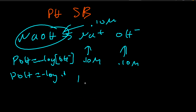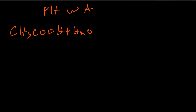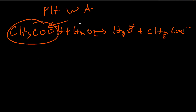Now let's see how to find the pH of a weak acid — this is where things get a bit more complicated. A weak acid doesn't break up completely. Let's say CH₃COOH + H₂O ⇌ H₃O⁺ + CH₃COO⁻. With an original concentration of 0.20 M, we set up an ICE table: 0.20, 0, 0. The change row is minus X, plus X, plus X.